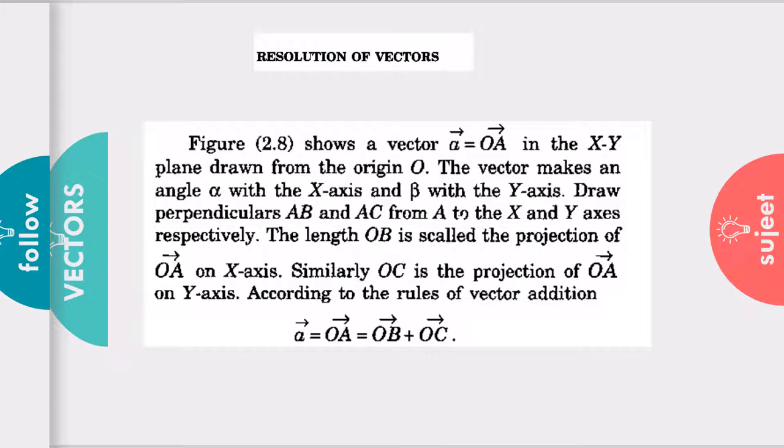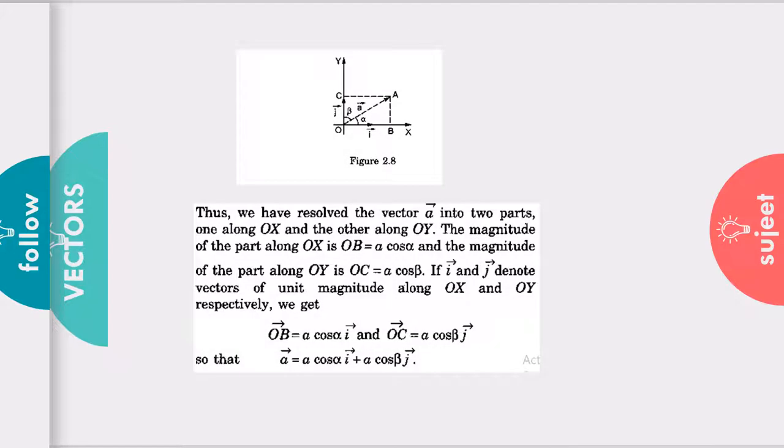So vector A can be written as vector OB plus vector OC. Vector OB is nothing but the horizontal direction X-axis component and vector OC is nothing but the vertical component which is in the Y-axis. Diagram C shows vector OB is in the X-axis and vector OC is on the Y-axis. Now as we have resolved the vector into two parts, one along OX and other along OY.